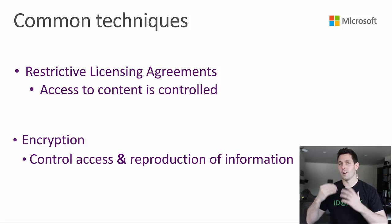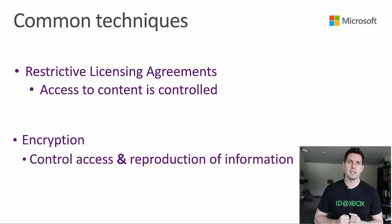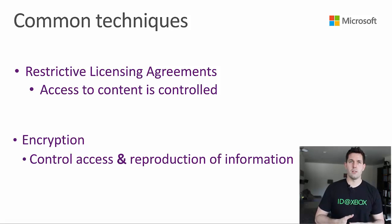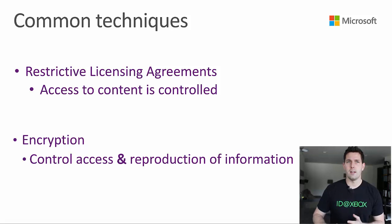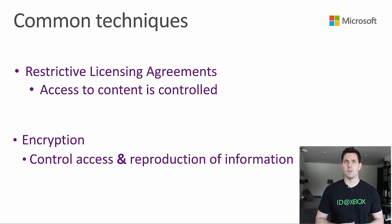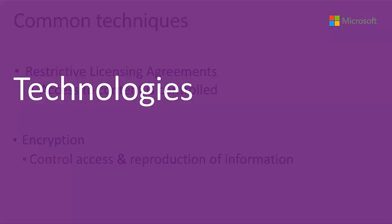Encryption is another way of controlling things. The content provider can wrap that content with a bit of security that requires a key or way of decrypting or unlocking the information — whether it's audio, a movie, or a game — to allow people to view that content. This is probably the most prevalent form at least for digital content today. You look at things like Netflix, Amazon, and Hulu — they all use different forms of encryption, which I'll get into shortly.